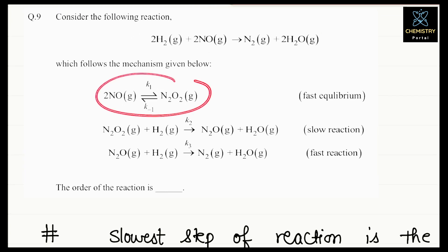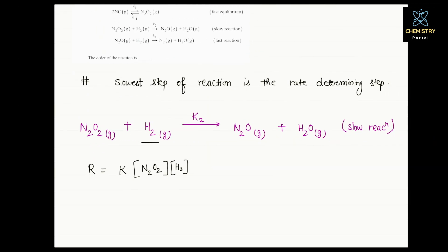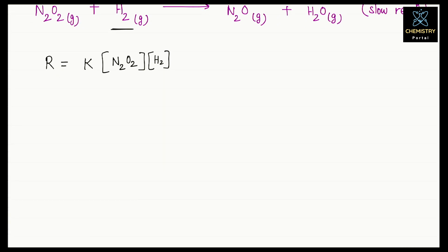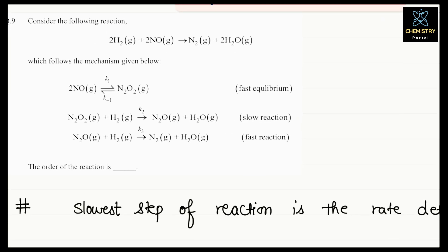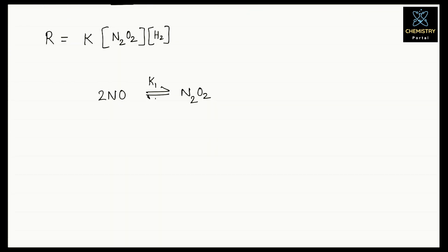We have been given the fast equilibrium step: 2NO(g) ⇌ N₂O₂(g), where the forward rate constant is K₁ and the backward rate constant is K₋₁. We can write the equilibrium constant KC for this reaction: KC = K₁/K₋₁ = [N₂O₂]/[NO]².